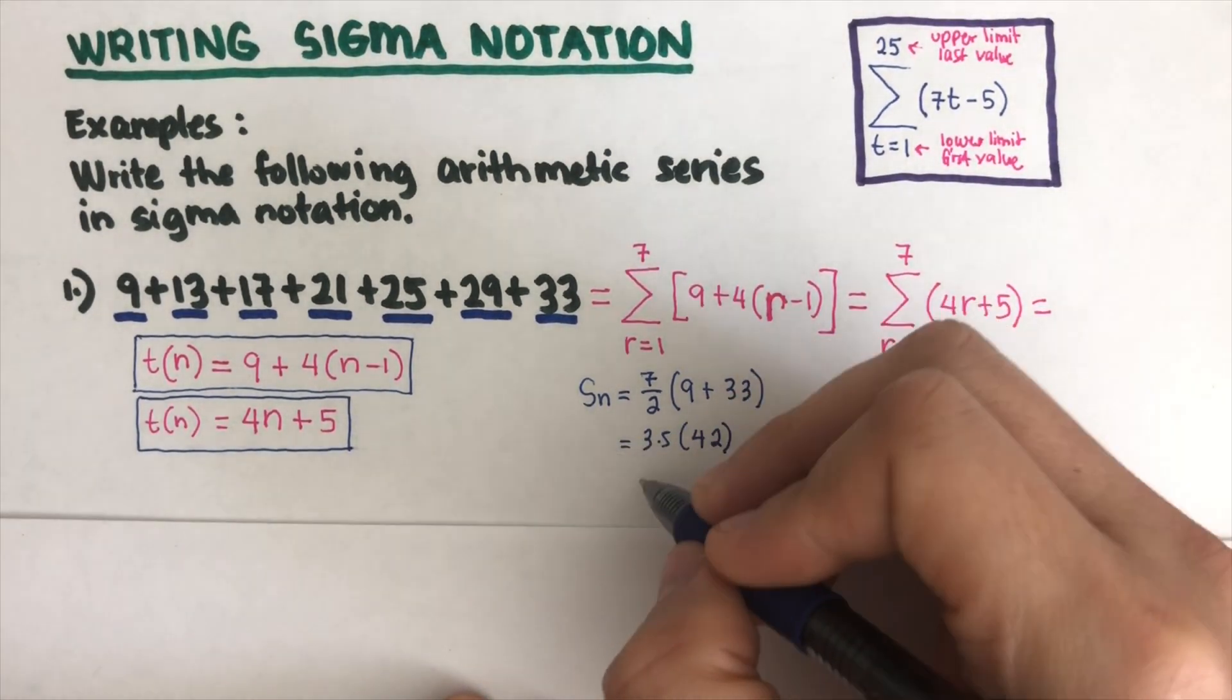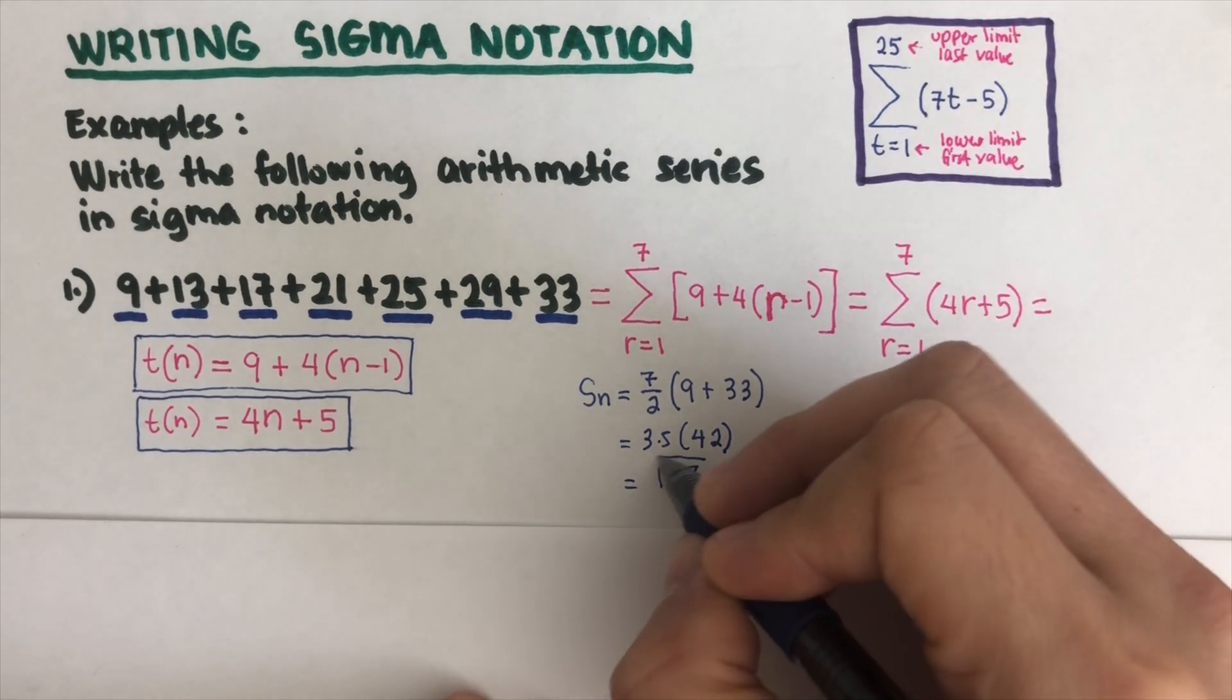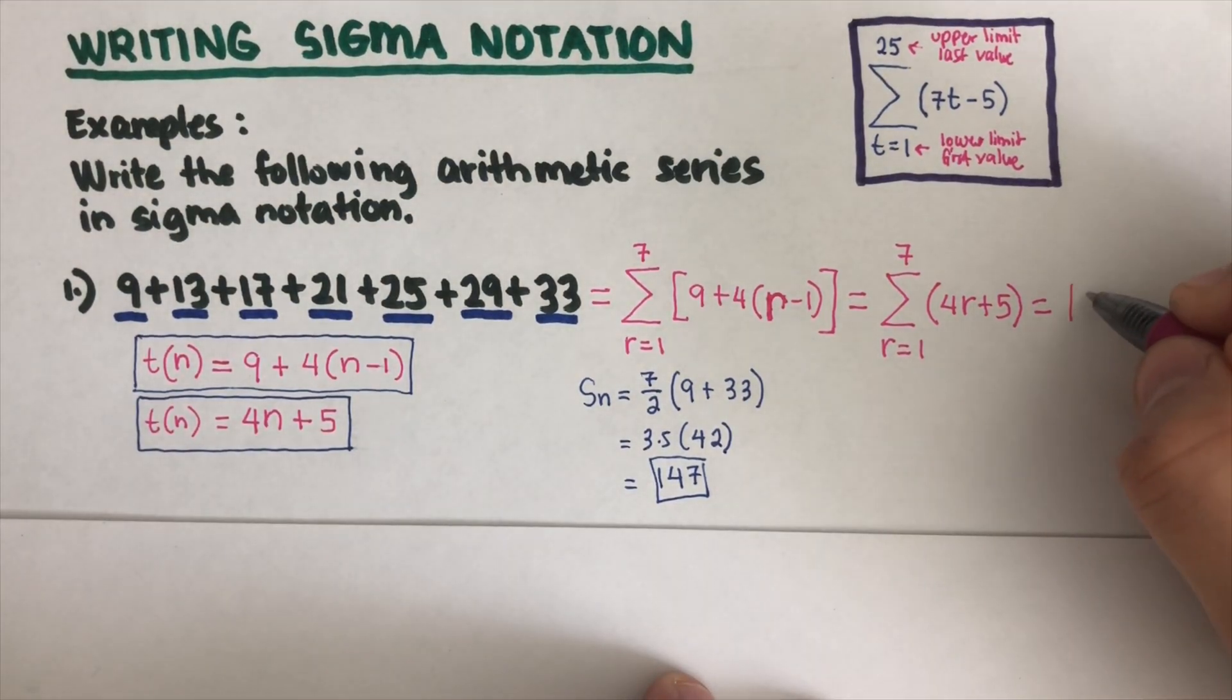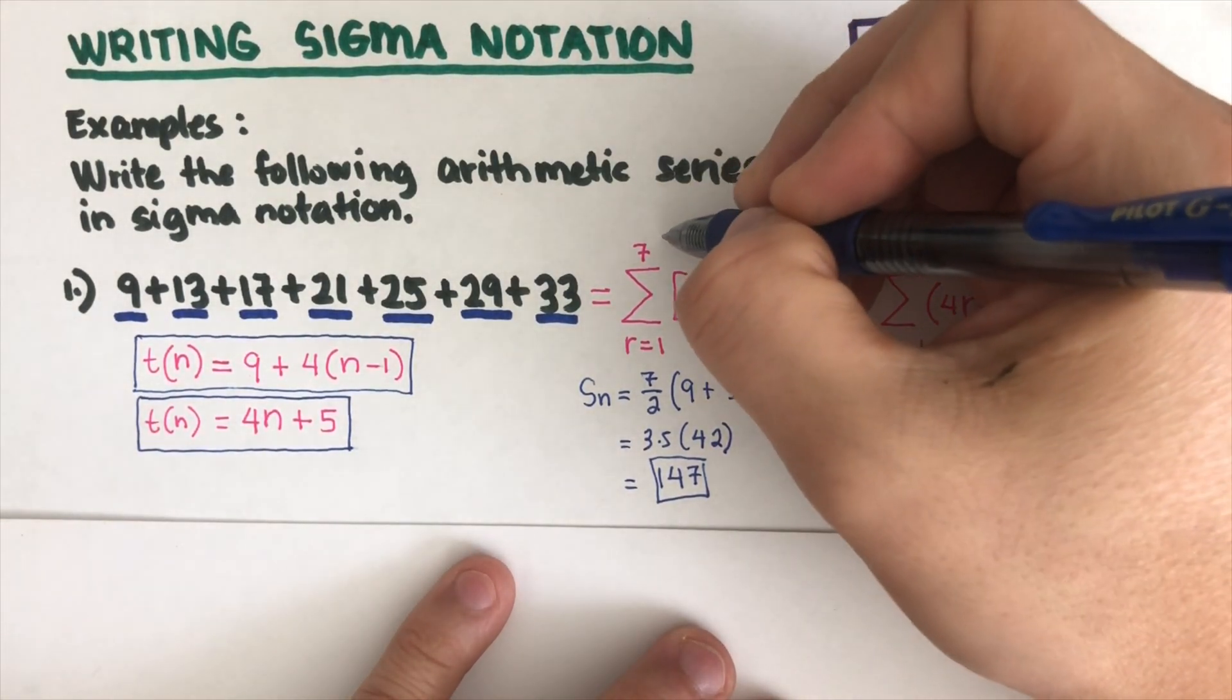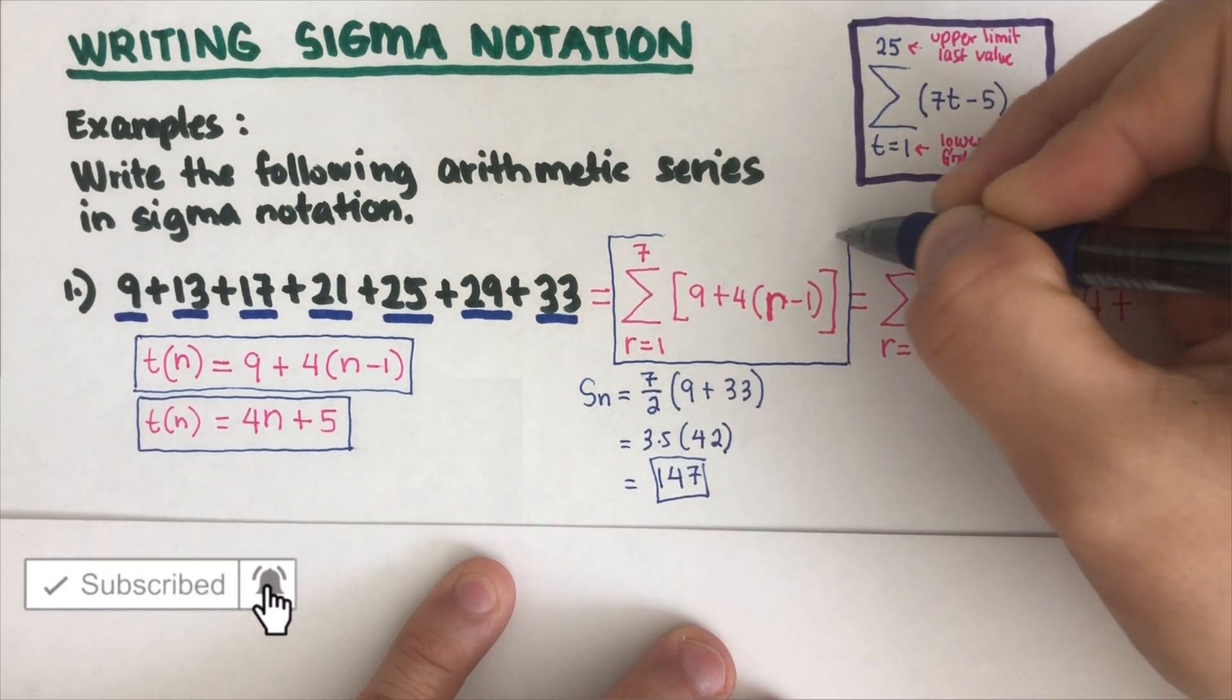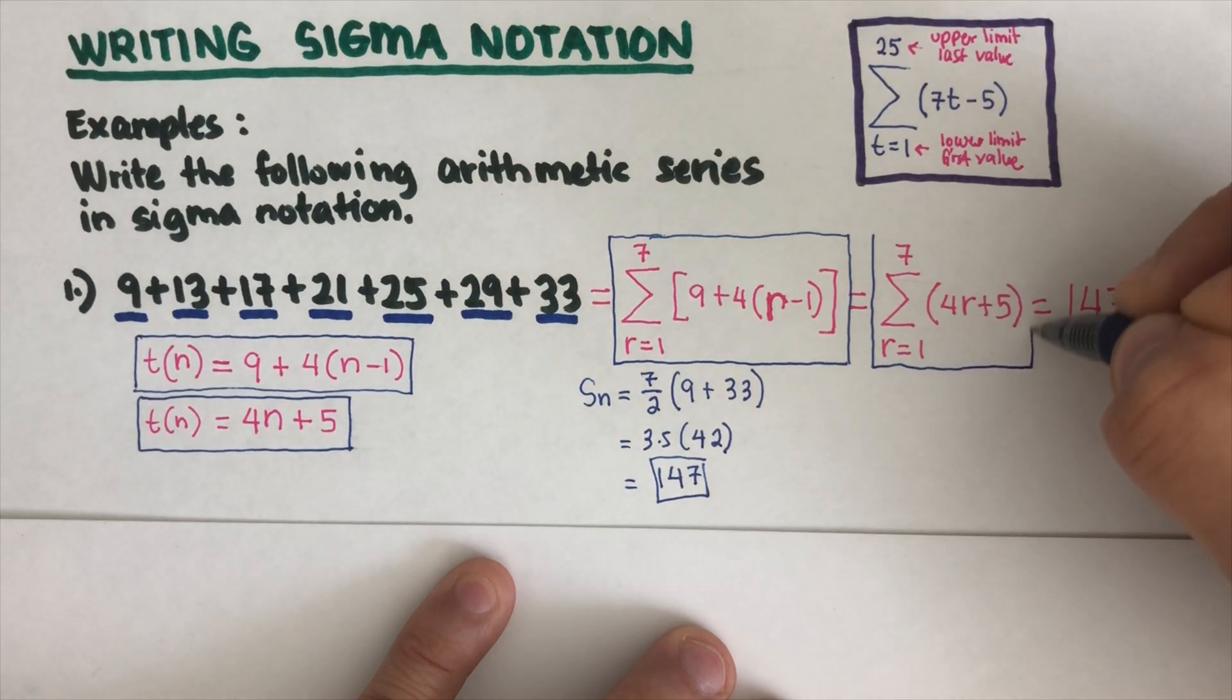If we multiply these two together that would come out 147. This is 147. This is the Sigma notation for this problem. These are the two Sigma notations that we can write.